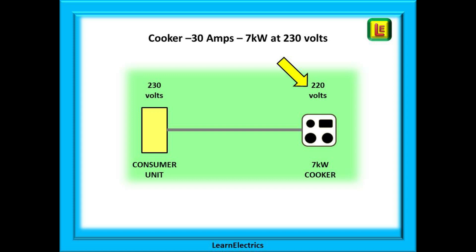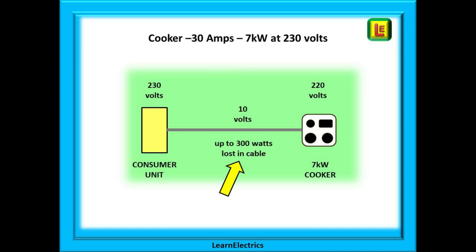At the cooker the voltage might only be 220 volts, meaning that 10 volts has been lost somewhere — it can only be in the cable to the cooker. One end of the cable is at 230 volts and the other end is at 220 volts. 10 volts doesn't sound a lot, but with 30 amps flowing through it that equates to 300 watts of energy generated in the cable — the equivalent of five 60-watt bedside lamps heating up the cable.